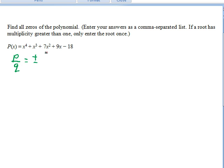They're going to have to be divisors of negative 18, so plus or minus 1, 2, 3, 6, 9, and 18 are our possibilities.